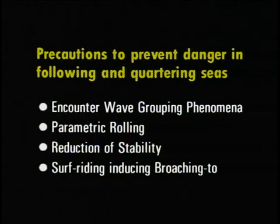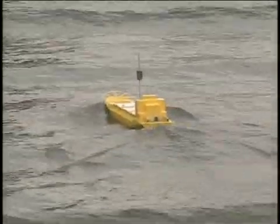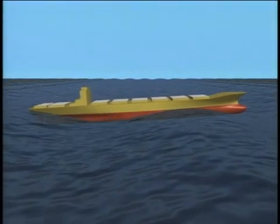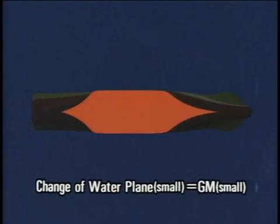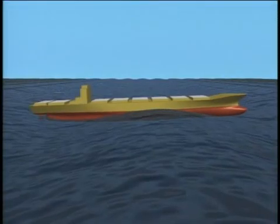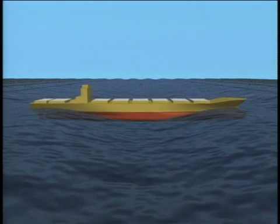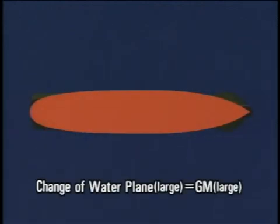Next, we will look at the dangers resulting from a reduction in stability. While sailing in following and quartering seas, greater attention has to be paid to the reduction of stability. The degree of stability is determined generally by the area of the waterplane, as previously shown in the chart. If a ship rides on a crest equal in length to the ship's length at midships, stability is reduced as the waterplanes at her bow and stern decrease due to lower waterlines at both ends. When a trough of the same wave passes the midships, stability is increased as the waterplanes at her bow and stern increase due to higher waterlines.